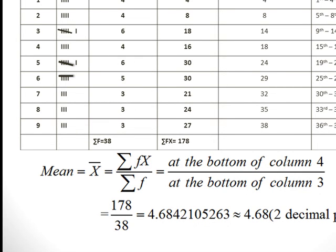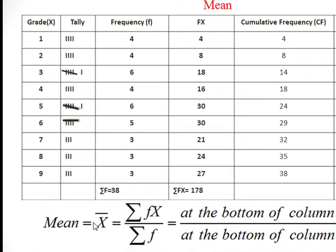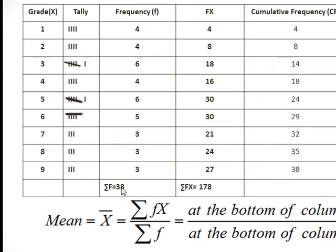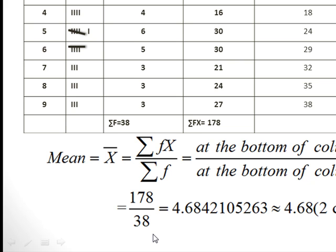To find the mean, x-bar equals the summation of fx divided by the summation of f. At the bottom of column 4 you have summation of fx which is 178, and at the bottom of column 3 you have summation of f which is 38. So 178 divided by 38 gives 4.6842105263, which equals approximately 4.68.